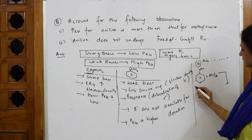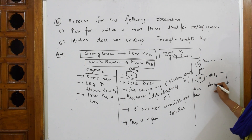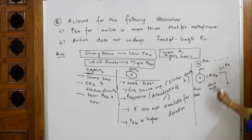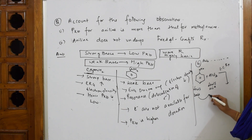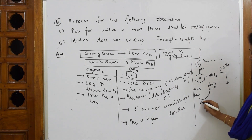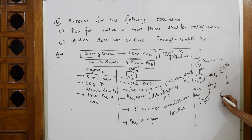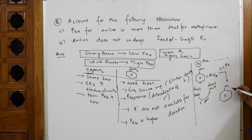Aniline is a Lewis base; AlCl3 is a Lewis acid. A Lewis base donates an electron pair to a Lewis acid. Nitrogen in aniline donates its electron pair to AlCl3. When it donates the electron pair, it forms a salt: NH2 of aniline combines with AlCl3 to form a complex salt — [NH3]⁺[AlCl3]⁻.